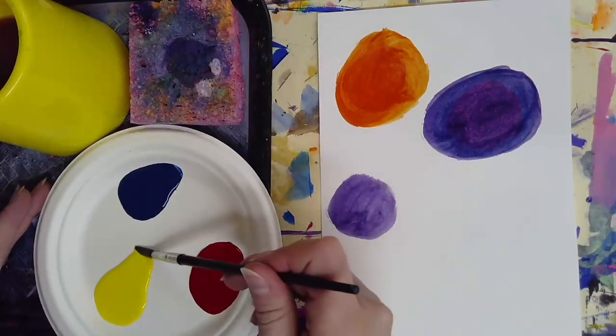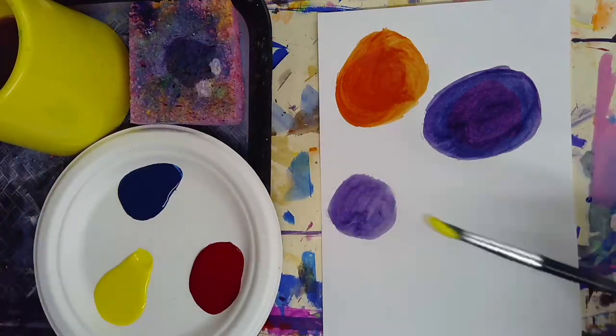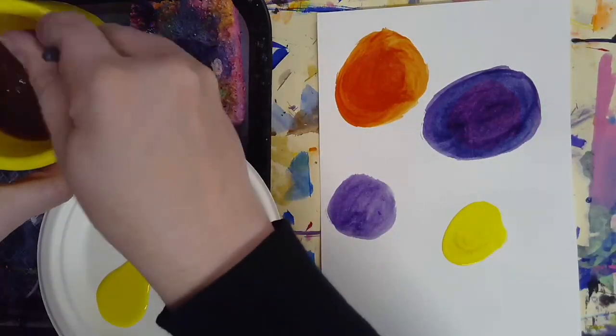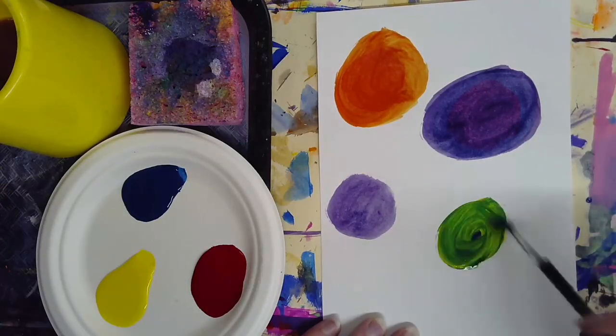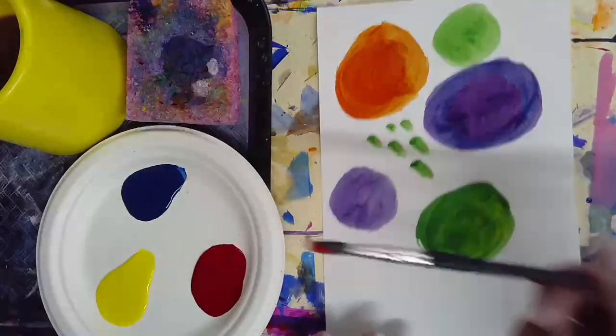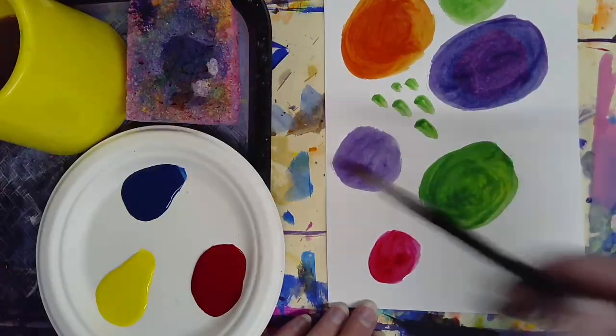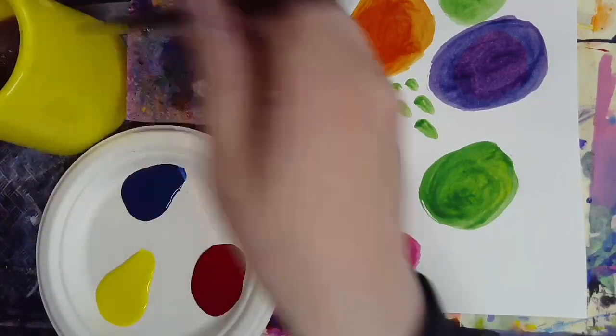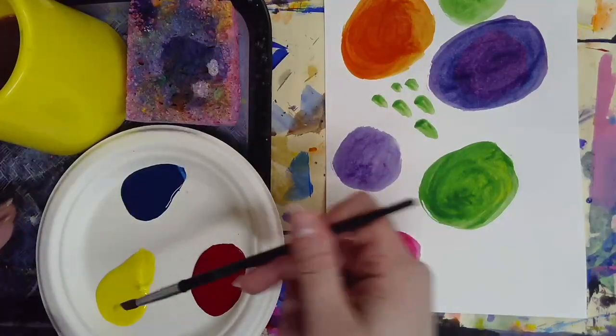I'm still going to wash my brush and then get a new color. Here I'm using yellow and blue to make green. I am remembering our book Mouse Paint where the little mice are tracking paint all over the place, so I made some little mouse prints on my paper as well.